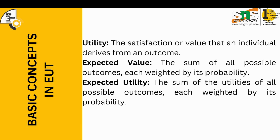Utility, according to this theory, refers to the satisfaction or value that an individual derives from an outcome — what value I attach to a pen, to an investment, or to relationships. Utility is how much satisfaction I get out of something or how much value I give to something. Expected value is the sum of all possible outcomes. Expected utility is the sum of utilities of all possible outcomes — how much I believe everything around me would benefit or satisfy my need. Expected utility, expected value, and utility are the three fundamental concepts around this theory.